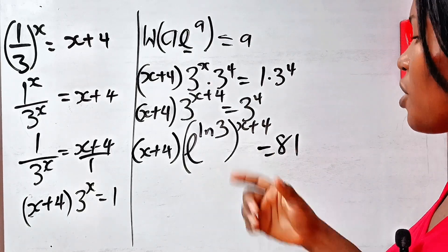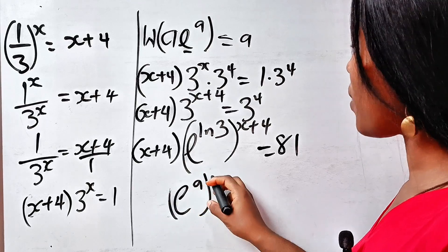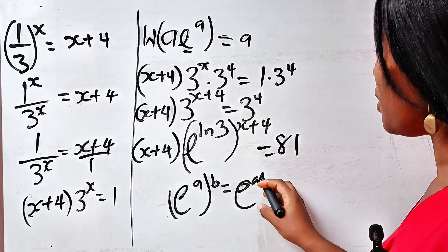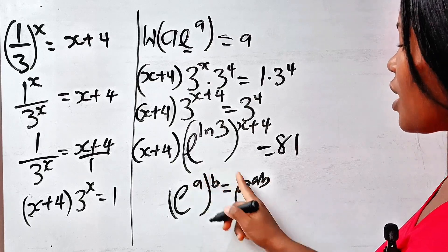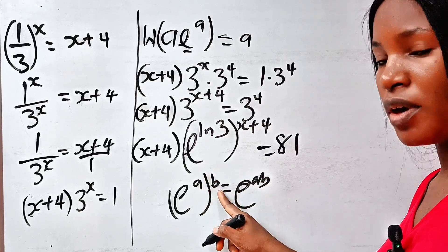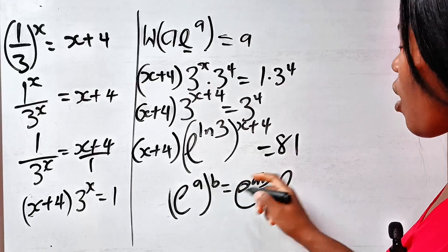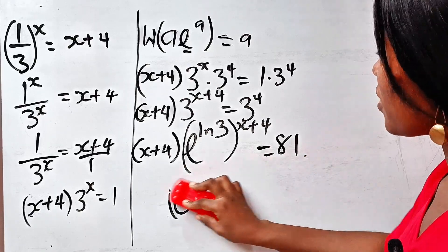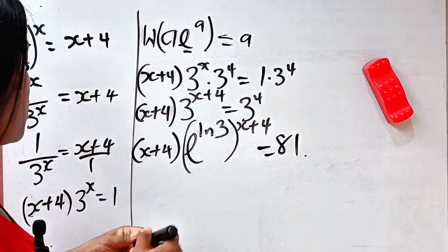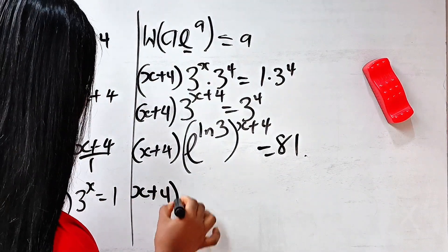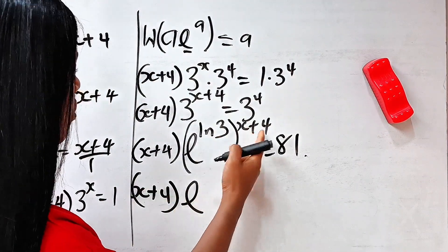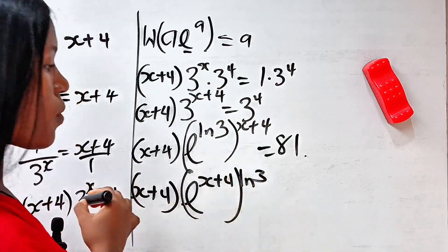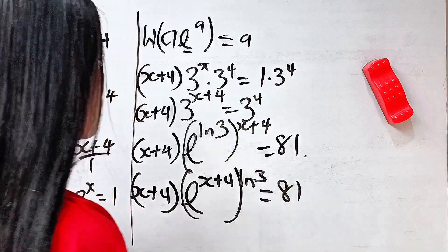Remember that e^(a^b) equals e^(ab), and you can also interchange this as e^(b^a). So I'll rewrite this as (x + 4) times e to the power of (x + 4)·ln 3, and that is equal to 81.